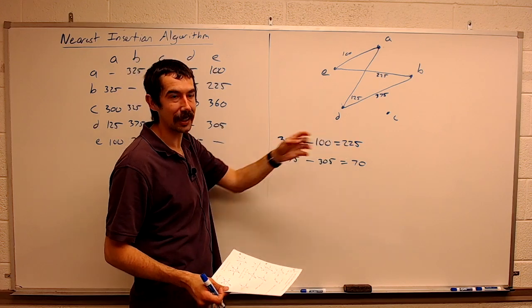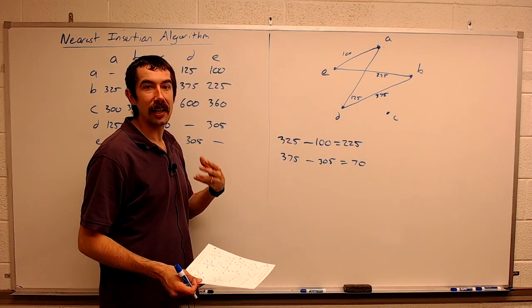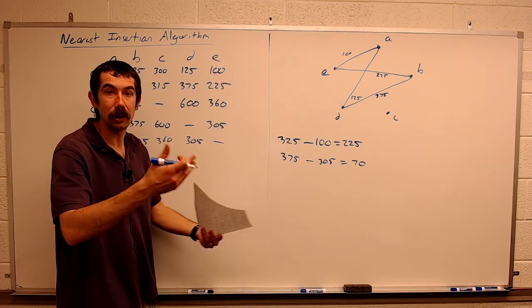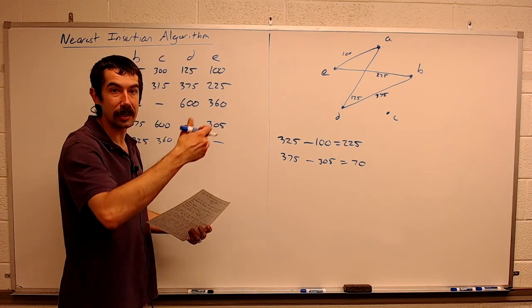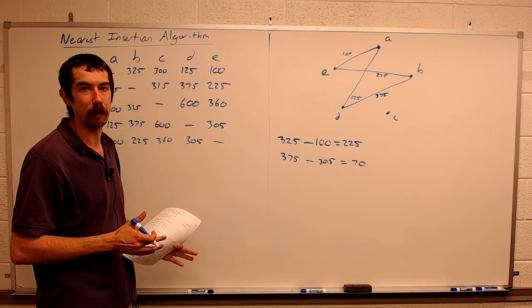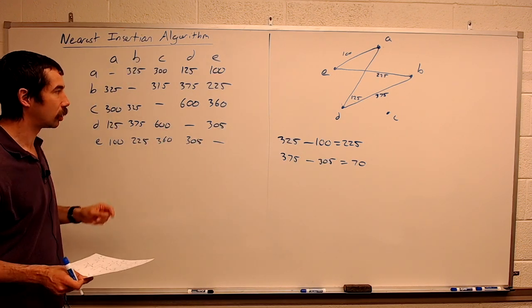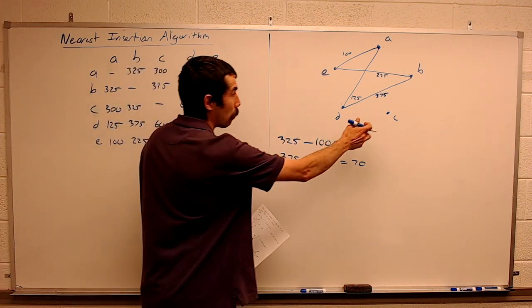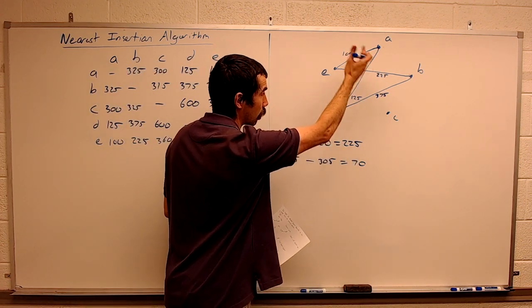It's not going to be complete until we get to the last one. But you can imagine this algorithm is nice if we're gaining information along the way. Like maybe some new vertices are introduced to the problem and you already have a cycle you want to work with. Nearest insertion would be great for that. Let's finish this off. So we want to see how we want to get C attached to our graph.